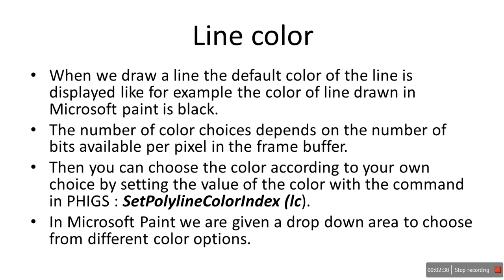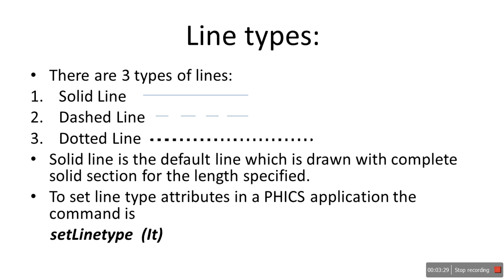Now line color — when we draw a line, the default color is black, like in Microsoft Paint. The number of color choices depends on the number of bits available per pixel. You can choose the color with the command set polyline color index, providing LC (line color) in brackets. In Microsoft Paint you can choose from a dropdown or use a color picker.